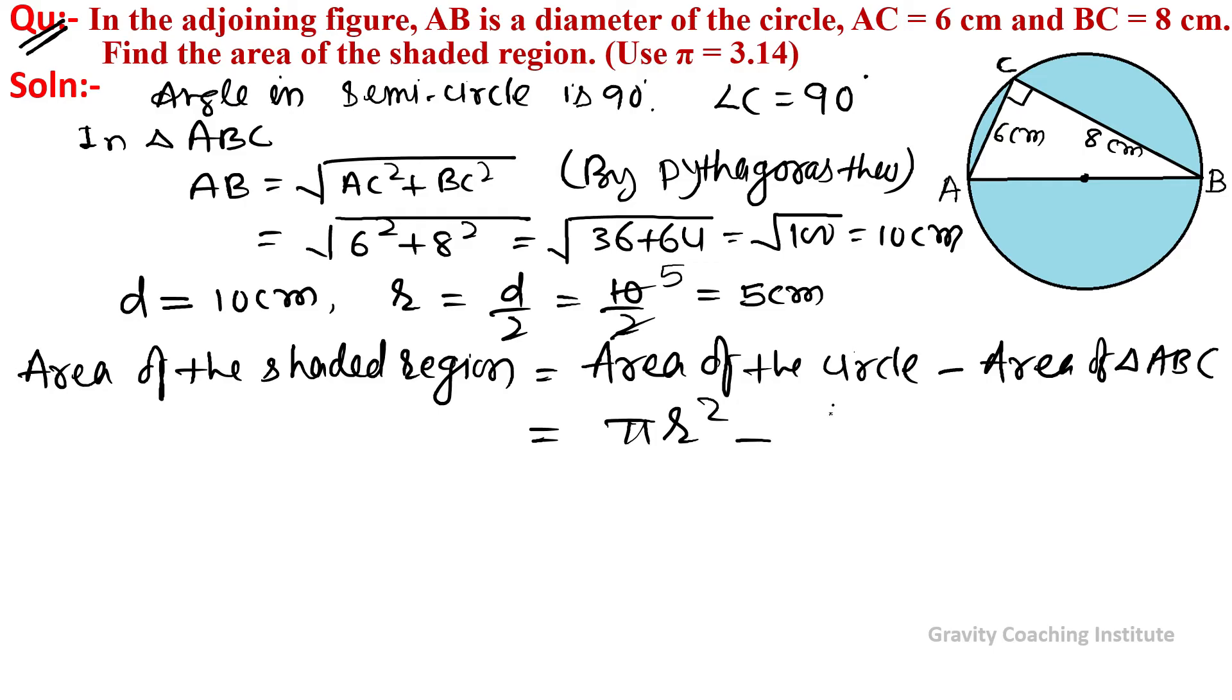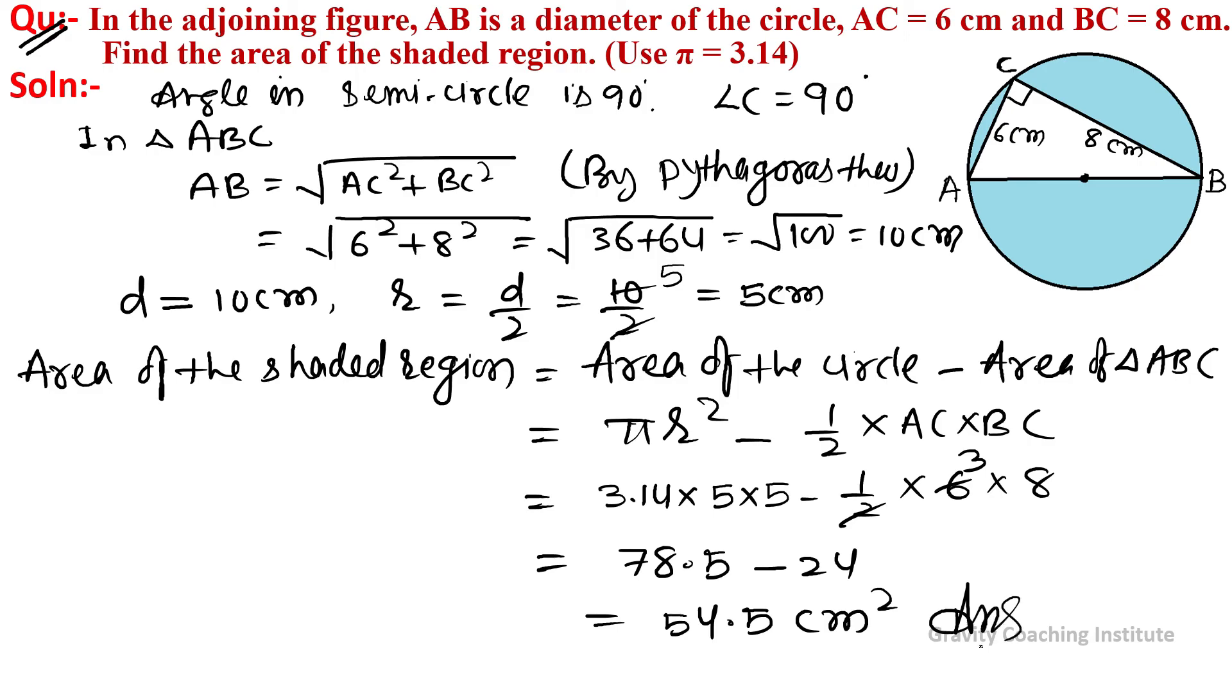Equal to πr² minus ½ × base × altitude = π × AC × BC. So 3.14 × 5 × 5 minus ½ × 6 × 8 = 78.5 minus 24 = 54.5 cm², which is our required answer.